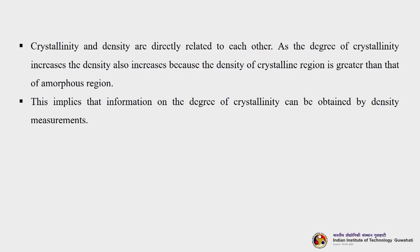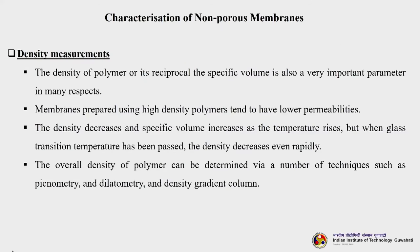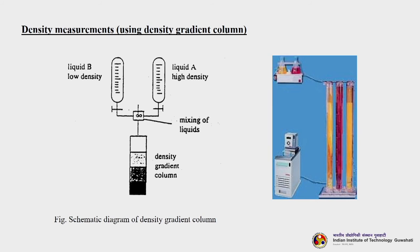Crystallinity and density are directly related — as degree of crystallinity increases, density also increases because the density of the crystalline region is greater than that of the amorphous region. This implies that information on crystallinity can be obtained by density measurements. For the density measurement technique, a density gradient column is used: two liquids — one of high density and one of low density — are mixed at different proportions in a mixing chamber and allowed to flow through the density gradient column. Different colouring agents are added to differentiate the two liquids; they float and settle upon each other, and the flotation level measured in centimetres gives the density.